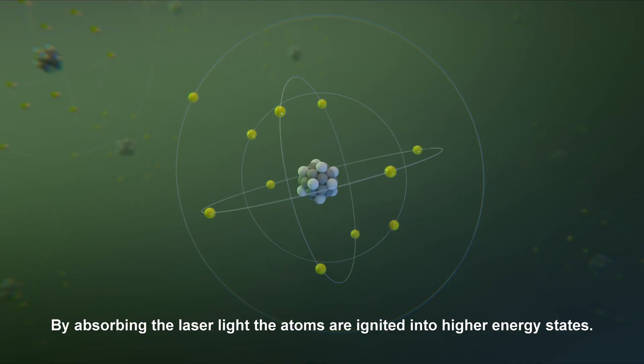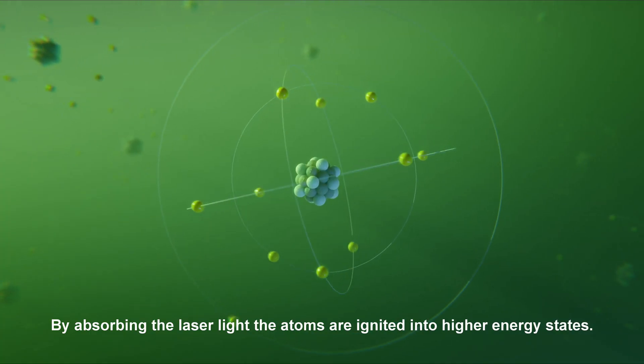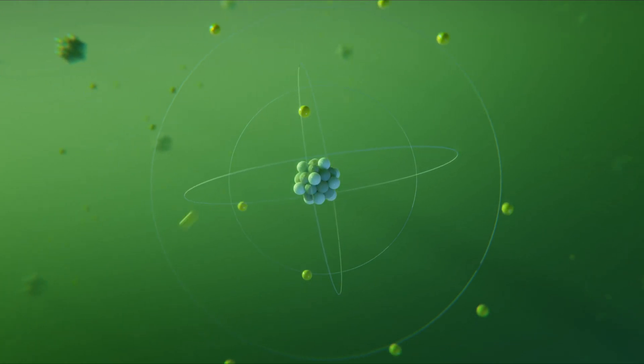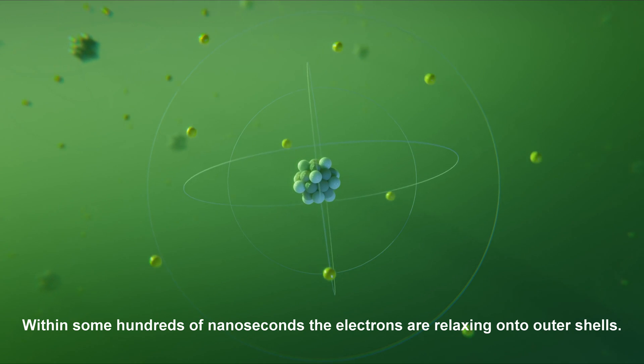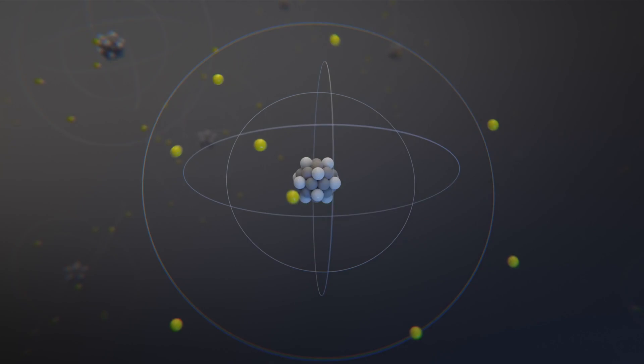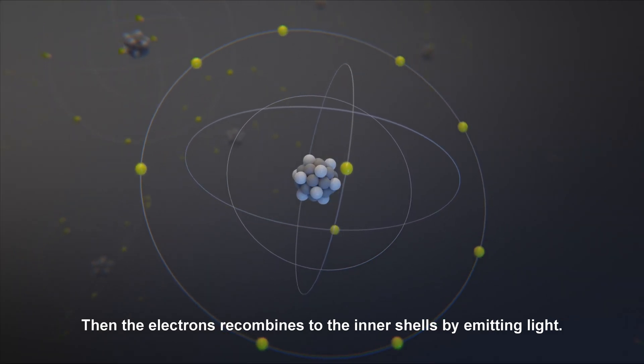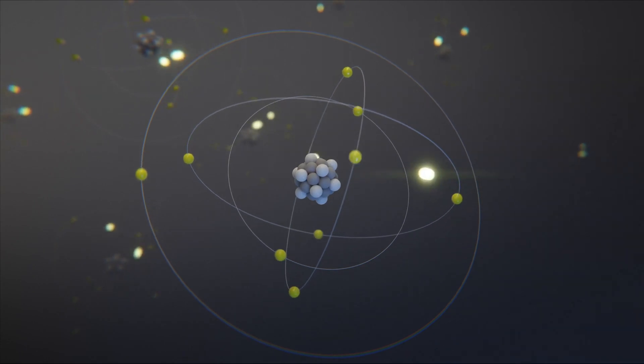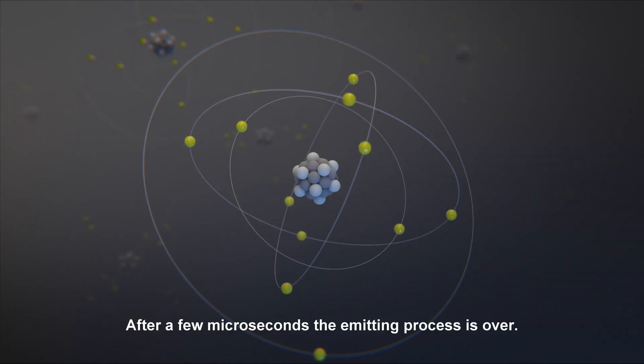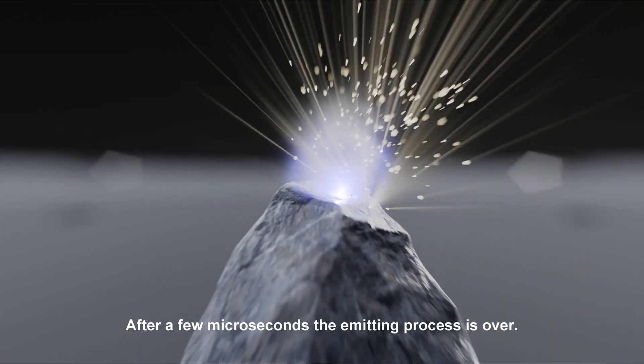By absorbing the laser light, the atoms are ignited into higher energy states. Within some hundreds of nanoseconds, the electrons relax onto outer shells. Then the electrons recombine to the inner shells by emitting light. After a few microseconds, the emitting process is over.